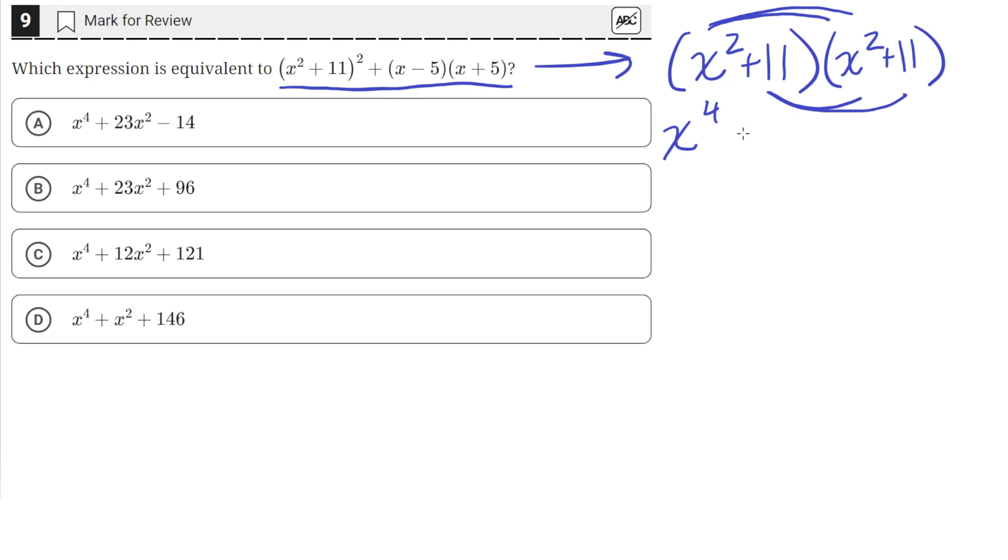So we'll get x to the fourth of the first one, since multiplying the same base, in this case x, with something raised to the power, we just need to add the powers and keep the base the same. So then x squared times x squared is x to the fourth, and then x squared times 11 is 11x squared, and then 11 times 11 is 121.